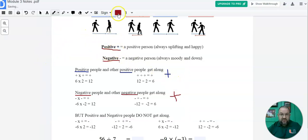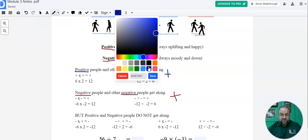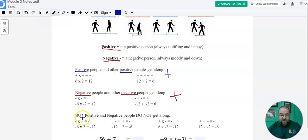I'm going to delete that. And now we're going to change to blue. Positive and negative people do not get along. They're always going to be negative.